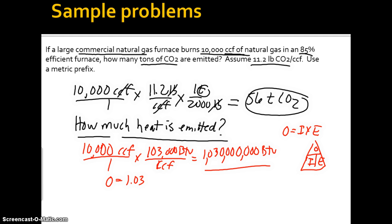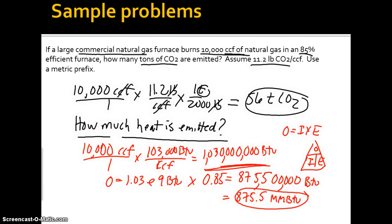So our output then is going to be the input times the efficiency. So our input BTUs are here. So that's 1.03 times 10 to the 9th BTU times our efficiency is 85%, 0.85, which is going to equal 87,550,000. So 5 zeros here. This is BTUs. So to convert to a metric prefix, it's 875.5 MMBTUs. So that's going to be our output. Notice our input was much higher than the output because we have less than 100% efficiency.